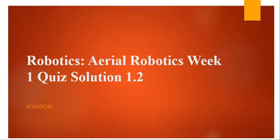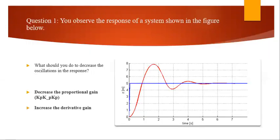Hello guys, once again two new quiz solutions for aerial robotics course for Coursera. It's week one, solutions for 1.2. So let's move to the first question. You observe the response of a system shown in the figure. Basically this is the figure we saw in the lecture as well, like the professor was mentioning.